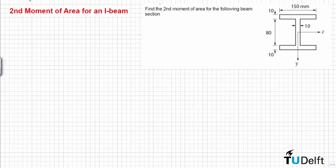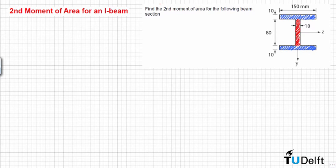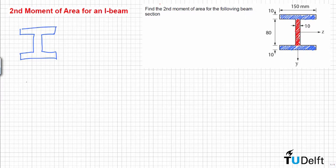What I propose instead is to calculate the moment of inertia of the flange first — the upper one and the lower one — and the moment of inertia of the web, and sum them up. In order to do this, we first need to locate our coordinate reference system. Since we have a double symmetric section, we know that the neutral axis is located exactly at 50 mm from the bottom surface of the beam.